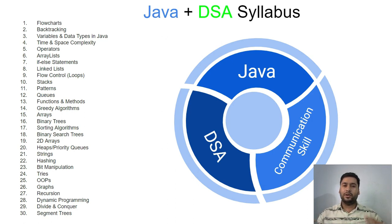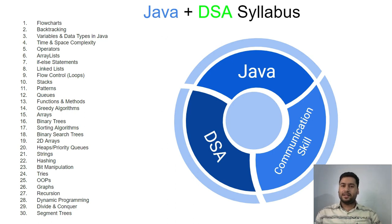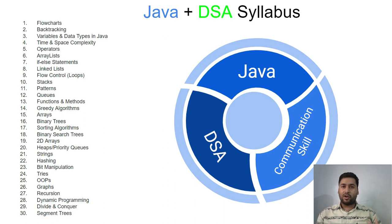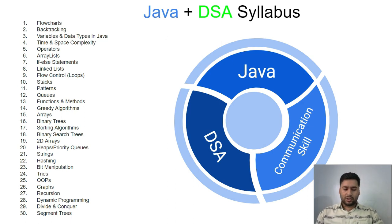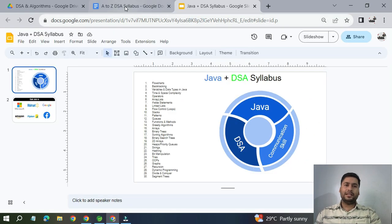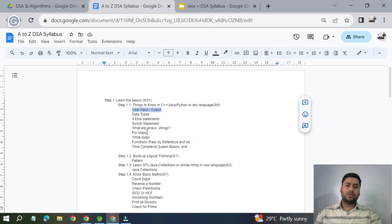We have an A-to-Z DSA syllabus. I will cover basic lectures and topics for learners to brush up their skills. Then we can go into basic mathematics and logical questions. Slowly I will increase the complexity of problems. In DSA, we go from easy to medium to hard level, one by one discussing each topic. For example, solving problems on arrays: first easy, then medium, then hard — 40 problems in total.